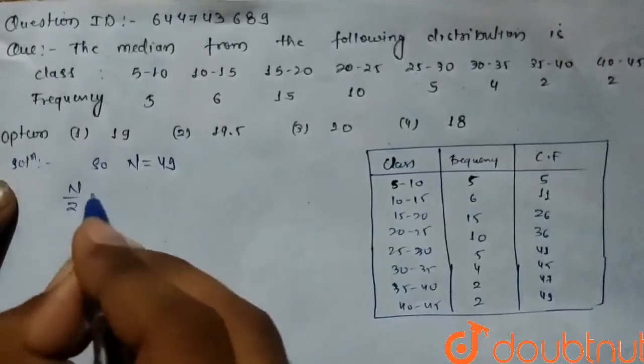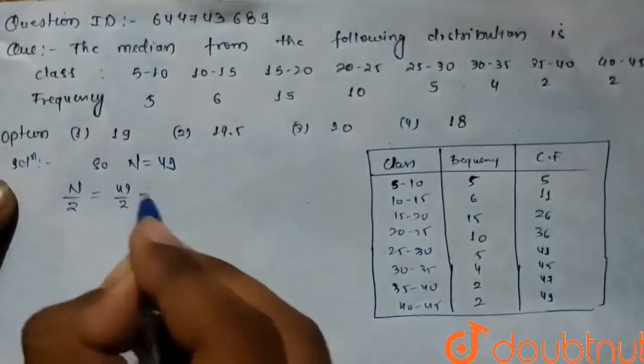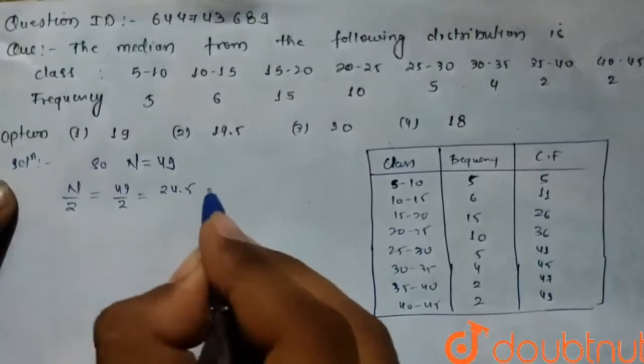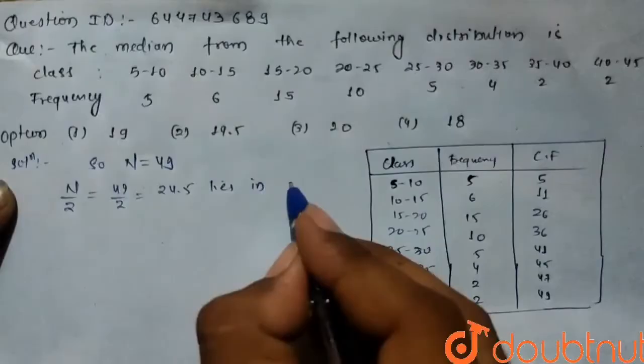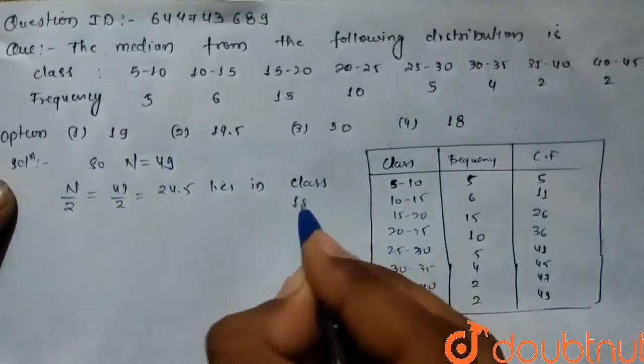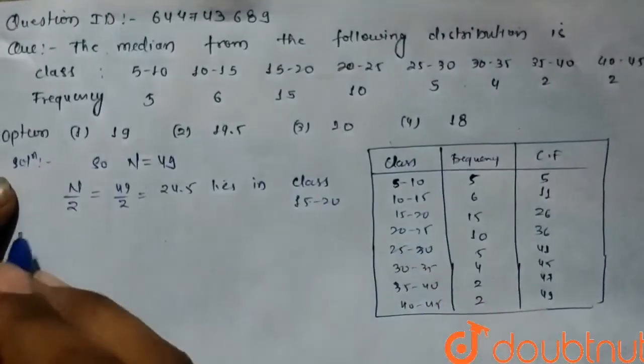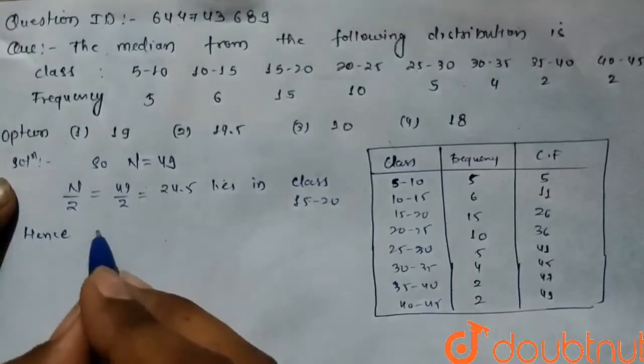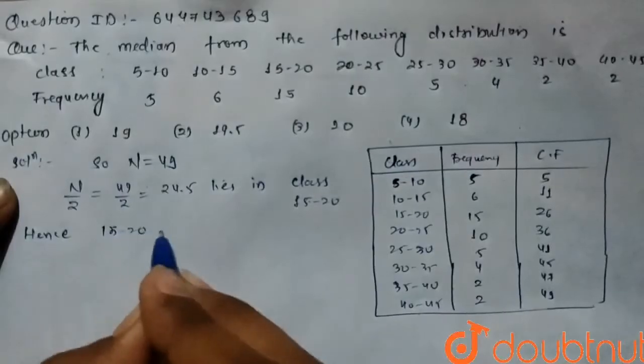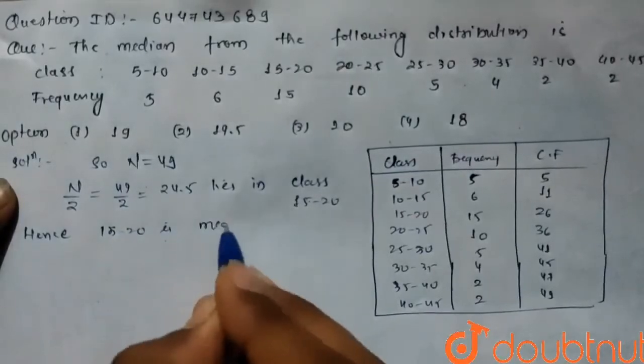So n by 2 which is 49 by 2 is 24.5 lies in class 15 to 20, hence 15 to 20 is our median class.